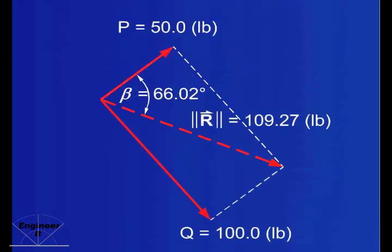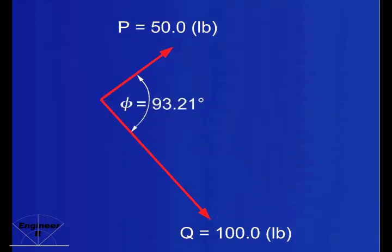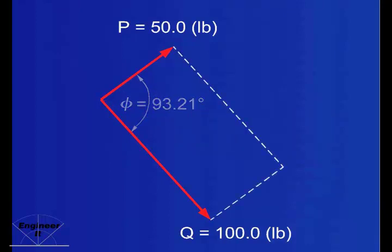Now that we know the magnitude and direction of the resultant vector R, we can use it to replace vectors P and Q.